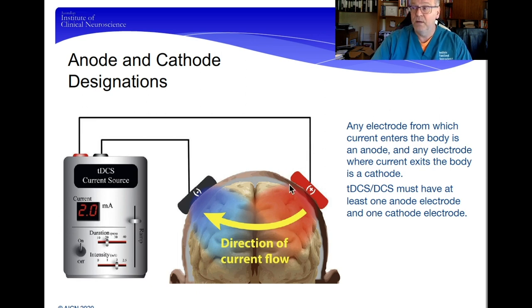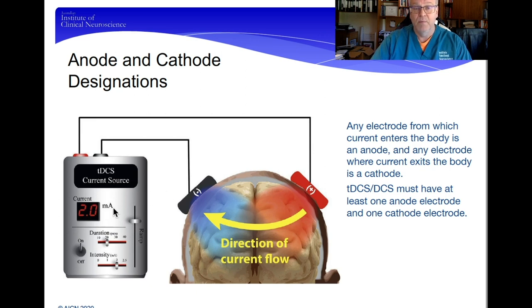The anode is the red electrode — by convention, always designated red. The current flows to the black electrode, the cathode. That flow is regulated by a machine that maintains the potential difference across the electrodes and keeps the ionic flow constant.